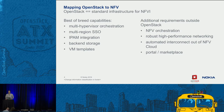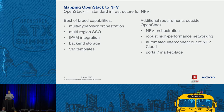NFV orchestration is a key component, as is robust, high-performance networking. OpenStack networking is continuing to improve release over release, but in terms of the requirements for NFV, it's not there yet, and the bar keeps rising. It's also important to be able to connect out of your NFV cloud — if you're doing network function virtualization with nothing to talk to, it's not very interesting — and also a portal or marketplace to expose these functions to the broader customer community.